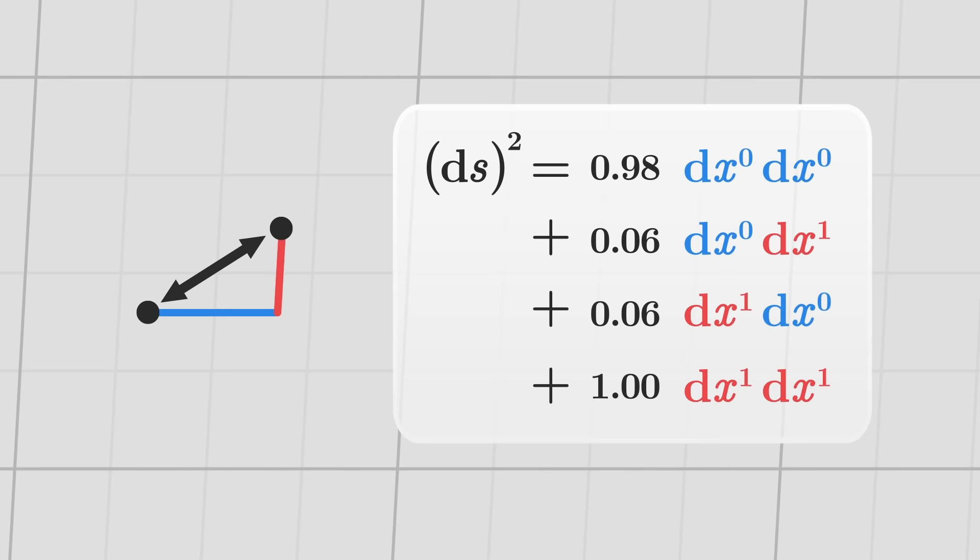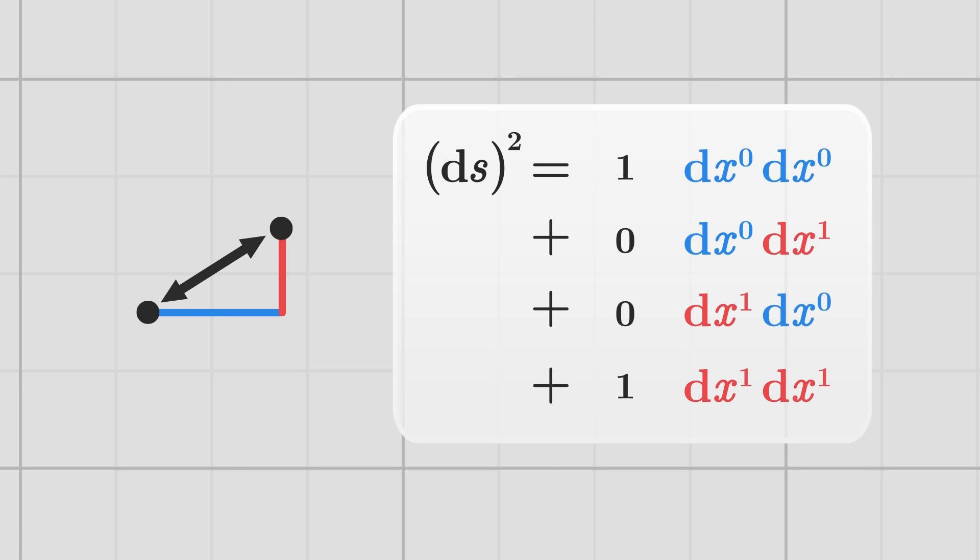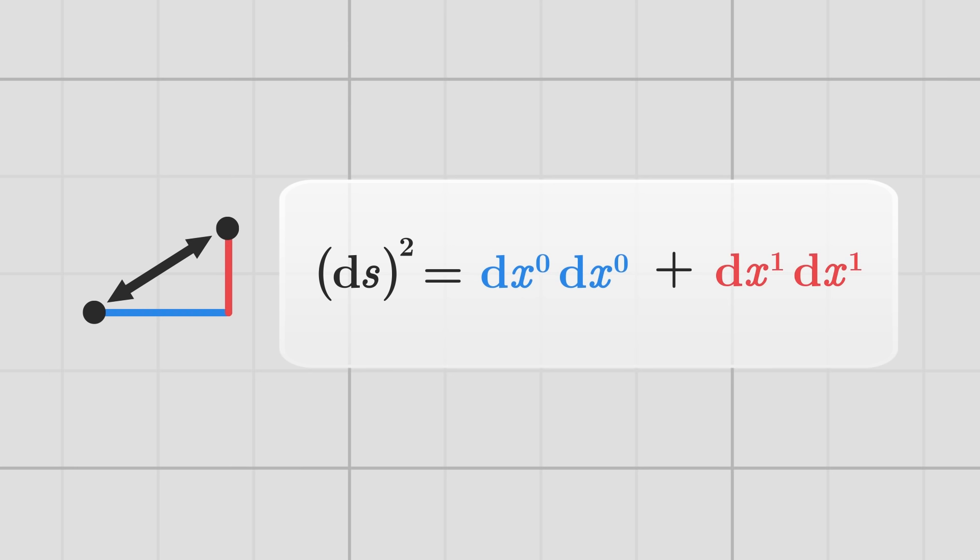In the special case where the lines form squares of side one, the coefficients are respectively one, zero, zero, and one, which brings us back to the Pythagorean theorem.